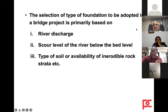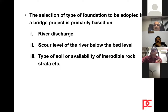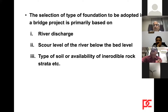The selection of type of foundation to be adopted in a bridge project is primarily based on river discharge, scour level below the bed level, type of soil, availability of inerodable rock strata, and its depth. These are the criteria based on which we decide whether to go for a well foundation, pile foundation, or shallow open footing. For example, in Hyderabad, we mostly go for open foundation because rock is available at a very shallow depth. In places like Chennai and Visakhapatnam, we need to go for pile foundations.